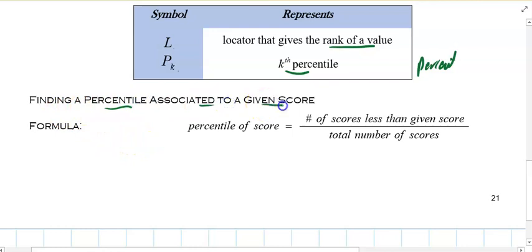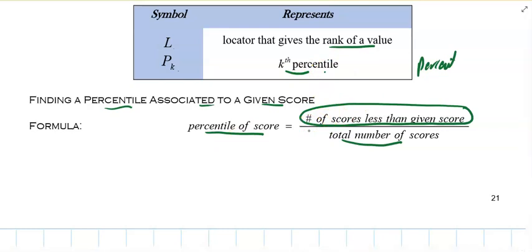Finding a percentile associated with a given score, there's a formula. The percentile of score, you take the total number of scores less than the given score divided by the total number of scores. So what percentile does, it tells you, if you say the 30th percentile, that tells you 30% of the measurements or the data were below this number. So if your score is the 30th percentile, that means you did better than 30% of the class.